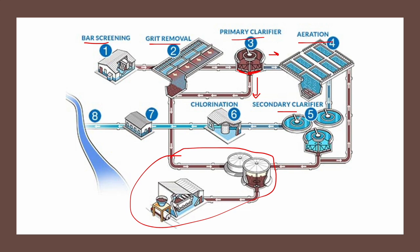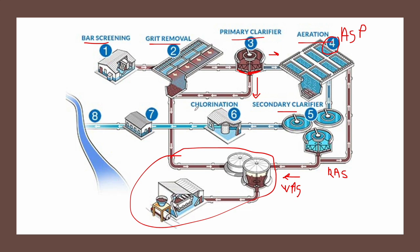After the primary clarifier, we have a secondary clarifier — another sedimentation process. Here we also have the production of sludge: some of it is wasted, known as WAS or Wasted Activated Sludge, and some is returned, known as RAS or Returned Activated Sludge, when using the ASP or Activated Sludge Process. This fourth stage can involve various other technologies and techniques. Finally, we have wastewater disinfection, which can be through chlorination or UV systems.